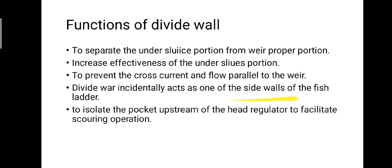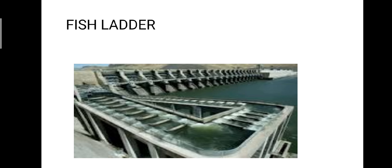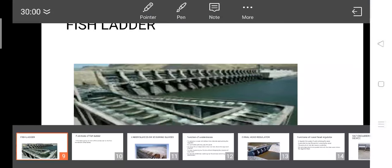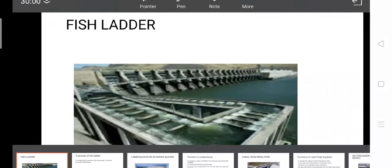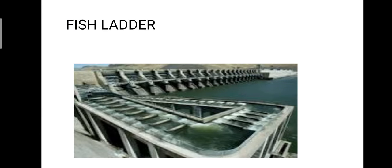The divide wall incidentally acts as one of the sidewalls of the fish ladder, to isolate the pocket upstream of the head regulator, and to facilitate the scouring operation. The next component is the fish ladder, which is provided just beside the divide wall for the movement of fishes.